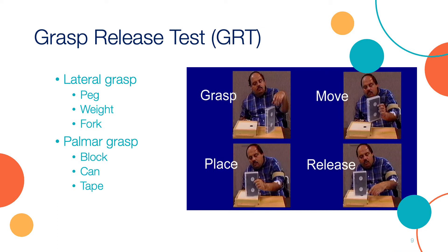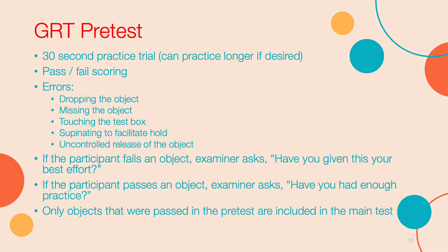Once grasp strength values are measured and all other setup activities are completed, the grasp release test commences with a pretest. The pretest assesses whether participants can acquire, hold, and release each of the six objects. Only objects successfully passed in the pretest are tested in the main test. During the pretest, the participant attempts to acquire, move, and release each of the six objects for a minimum of 30 seconds, with additional practice allowed if beneficial. General errors to look for include dropping the object, missing the object, touching the test box, supinating the forearm, or uncontrolled release.